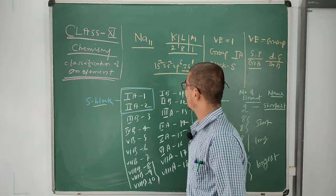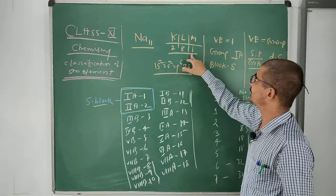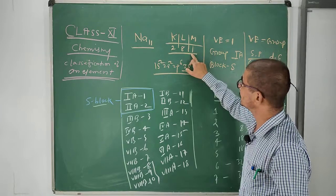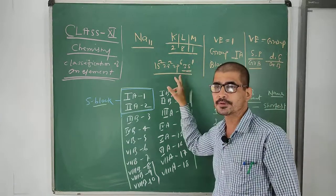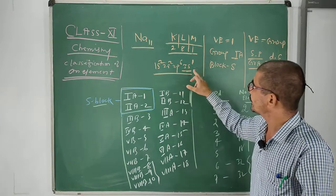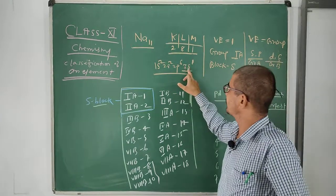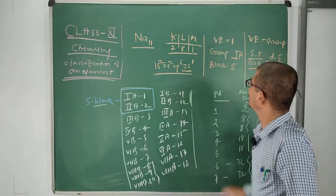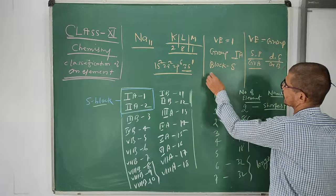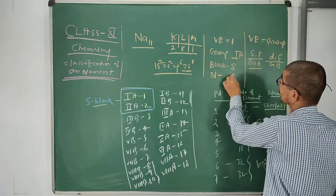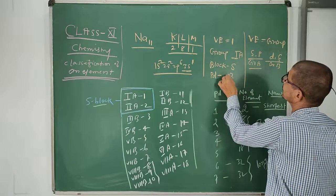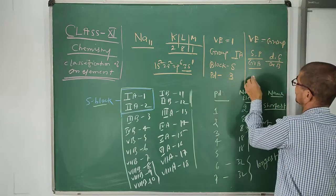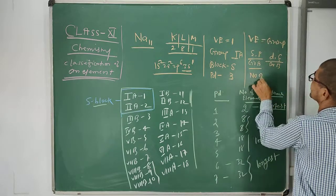The number of orbits is 3, which indicates the period. Another way of finding the period: whatever number is multiplied by the block — that number is the period. So sodium is placed in period 3. Number of orbits equals period.